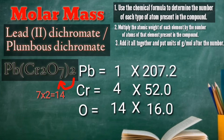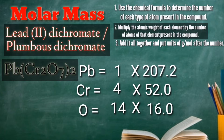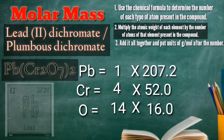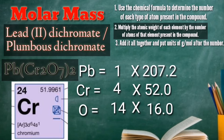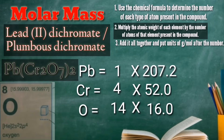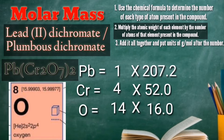Then, after that, follow step two: multiply the atomic weight of each element by the number of atoms of that element present in the compound. We're going to use the periodic table to identify the atomic weight of each element. For lead, we have 207.2 grams per mole; chromium, 52.0 grams per mole; and oxygen, 16 grams per mole.